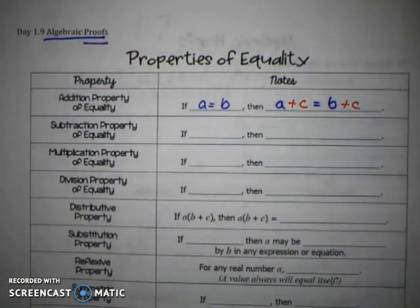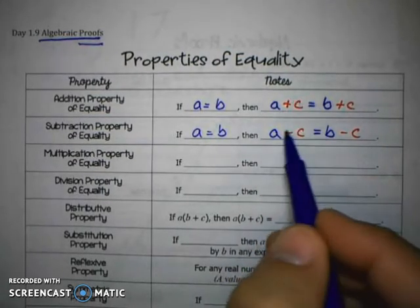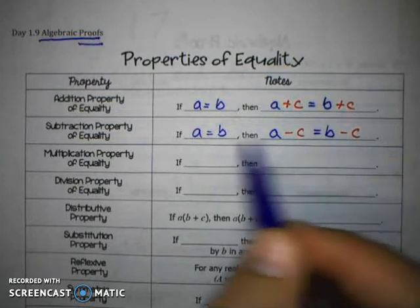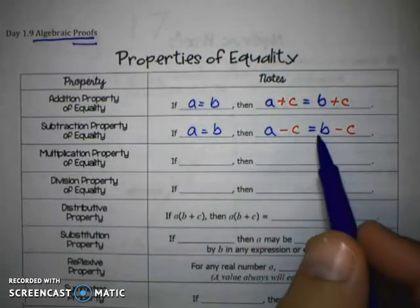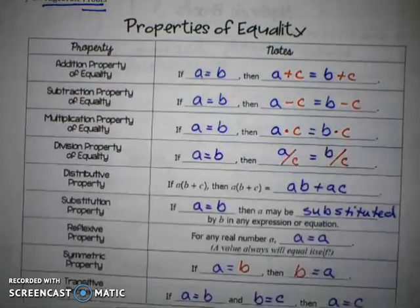Next is our subtraction property of equality. And to make the video speed up a little bit, I'm going to have these just show up automatically. If you need to pause at any moment, just go ahead and pause and copy it down. But the subtraction property of equality looks like this: A minus C equals B minus C if A equals B. So this is what allows us to subtract the same thing from both sides.